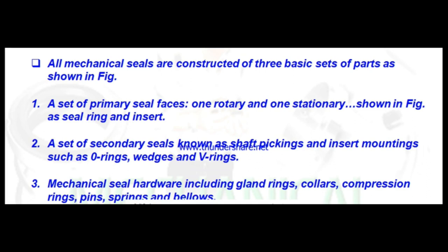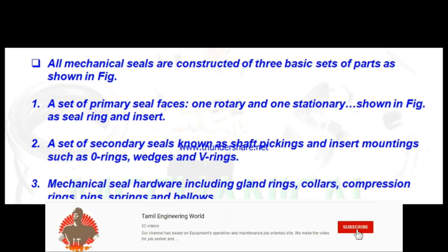The mechanical seal has three main components: first, the primary seal; second, the stationary seal; third, the mechanical seal components. The mechanical seal consists of a rotary and stationary seal.